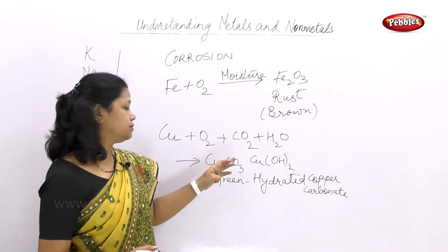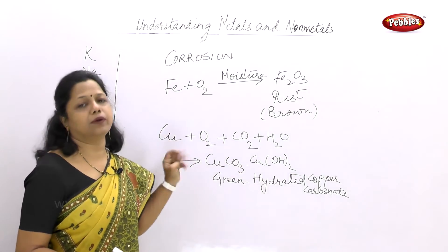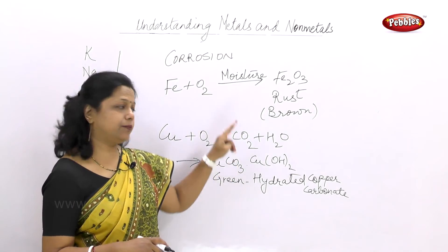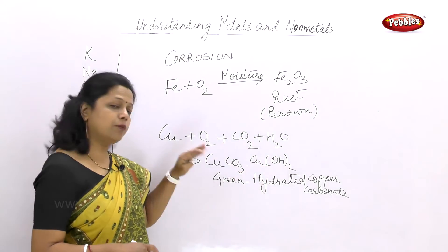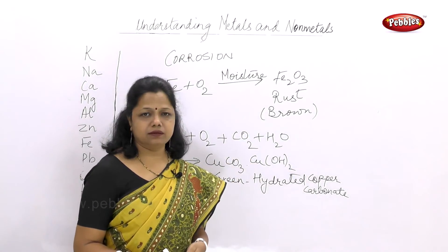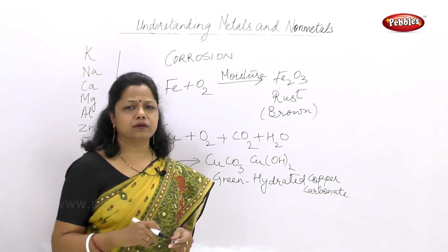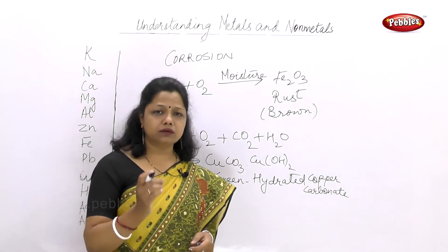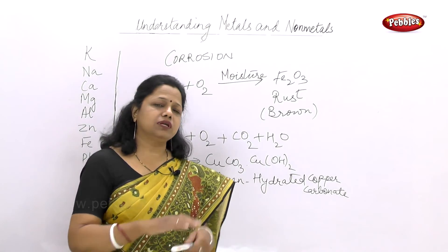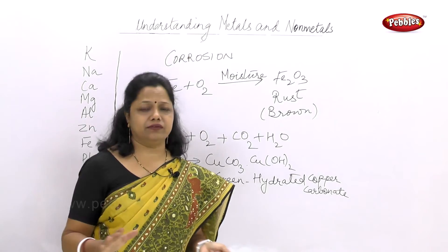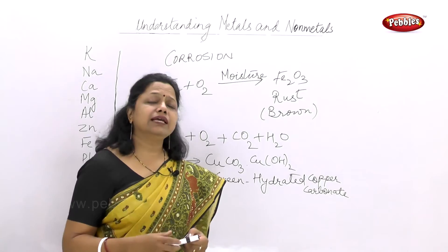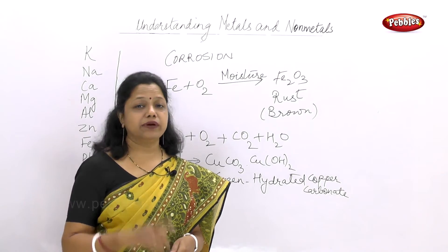This greenish colour is the result of corrosion of copper. Copper is reacting with oxygen and carbon dioxide in the presence of moisture to form a green coating. This is CuCO3·Cu(OH)2. Now, have you seen gold getting rusted? It is not so common. Gold is totally unreactive - it is not reactive at all. So we do not see corrosion very easily on gold.